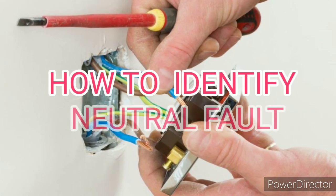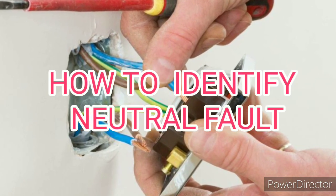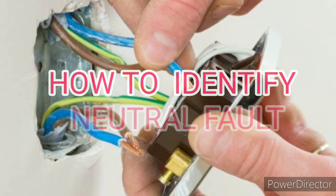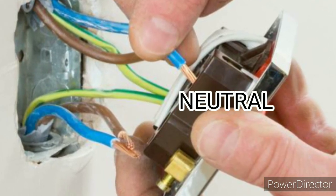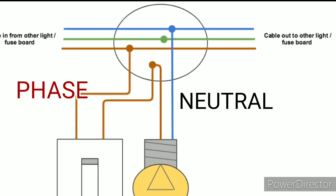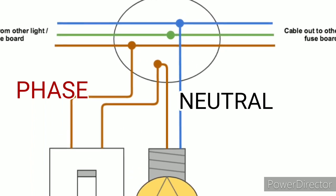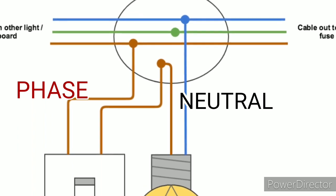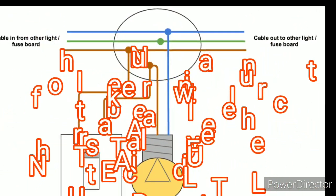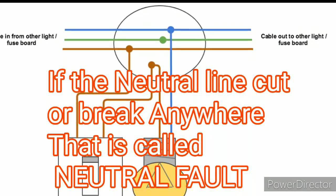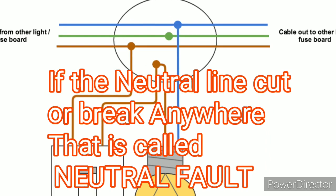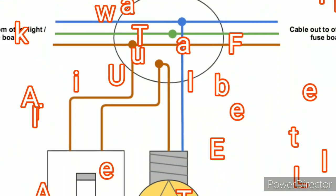Hello friends. In this video, I am going to explain how to identify a neutral fault. A neutral fault means for any closed circuit in AC, the neutral point — the incoming neutral point — is cut off, meaning the neutral point is not connected to the circuit. This is called a neutral fault. I will explain how to identify it using three methods.